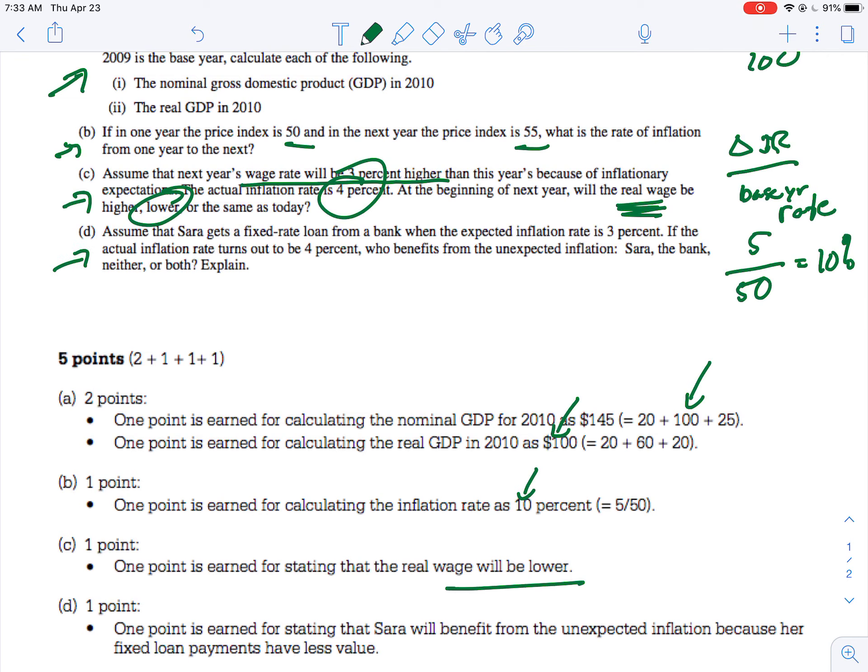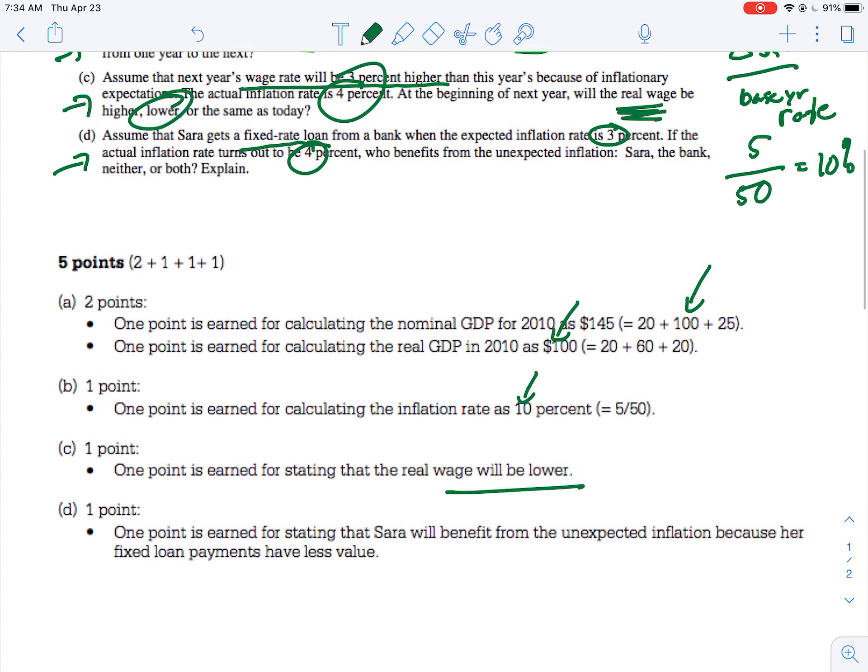All right, now let's look at the opposite situation. Sarah gets a fixed rate loan from a bank when the expected inflation rate is 3%. It actually turns out to be 4%. So what that means is that Sarah is paying the bank back with cheaper dollars. So she benefits from the unexpected inflation rate because her fixed loan payments have less value. So the way I usually think about it is that the dollars she's paying back with are cheaper than the dollars that she agreed to pay back with because of what happened in the macro economy. So she is the winner and the bank is the loser.